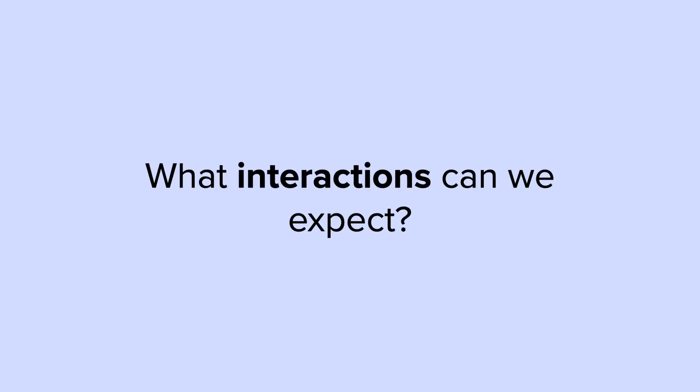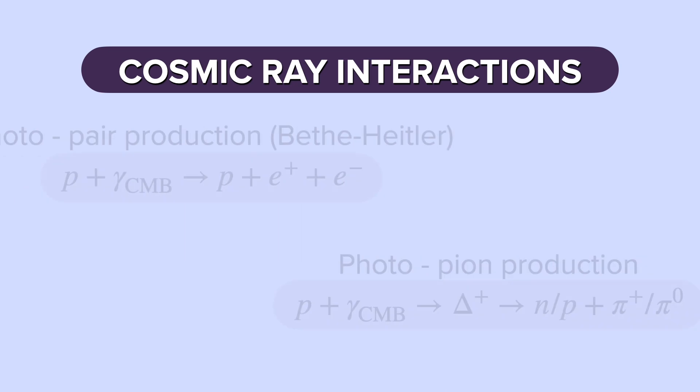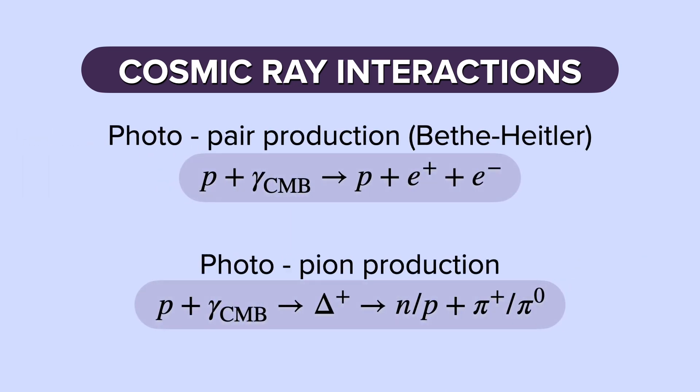What type of interactions can we expect from these cosmic rays? First, we have the photopair production, when we have our protons from our cosmic rays interacting with CMB photons and producing an electron pair.